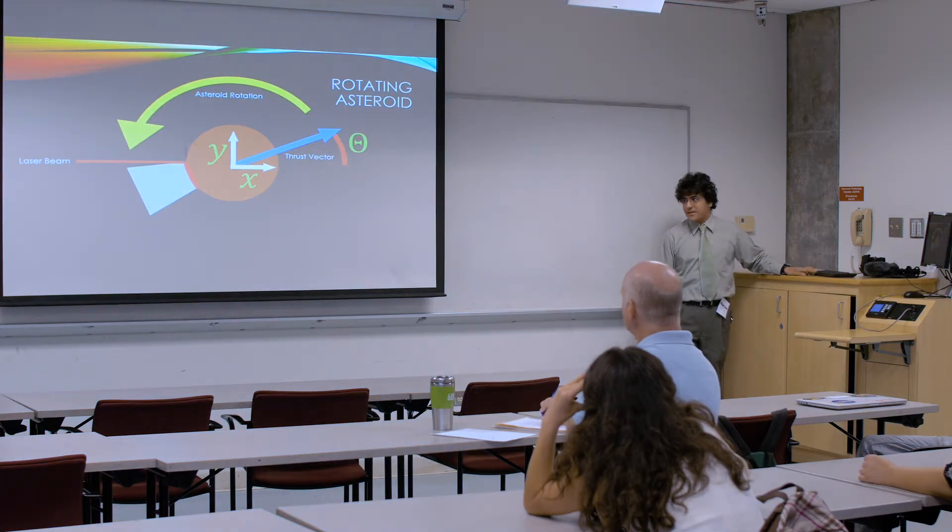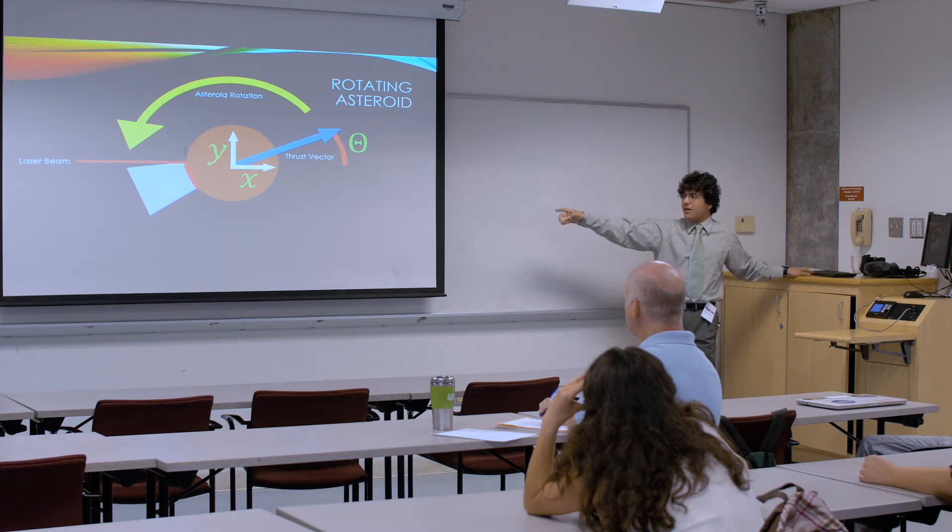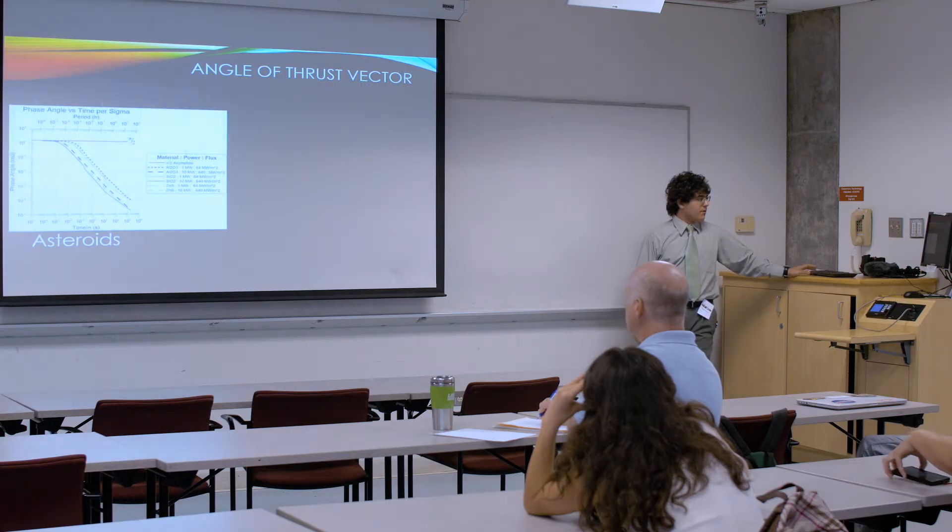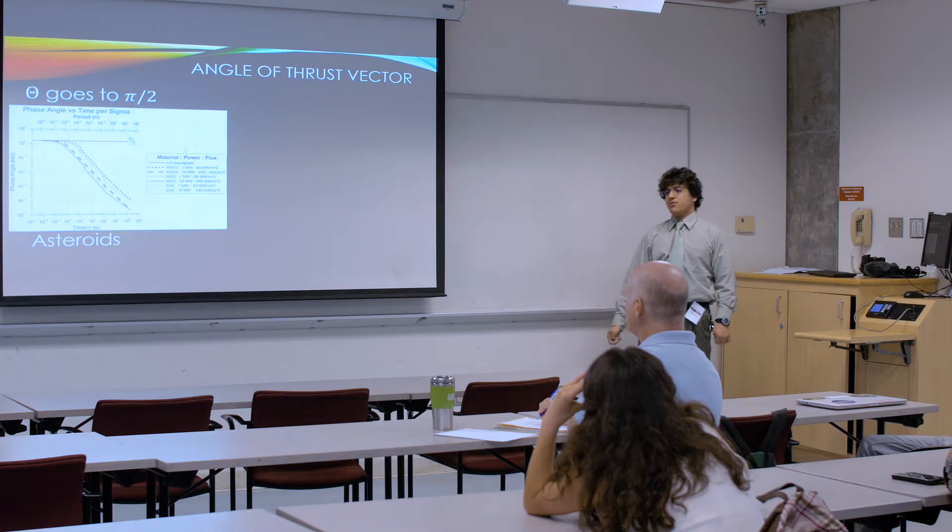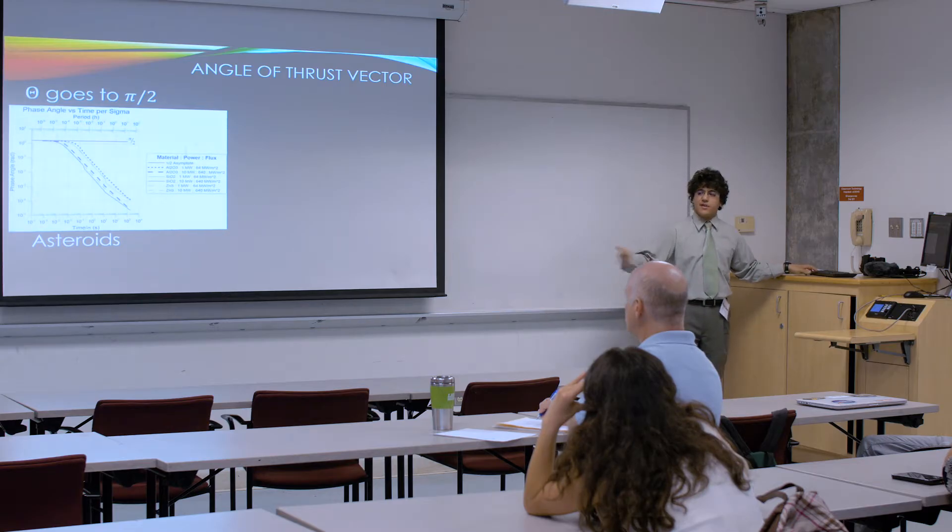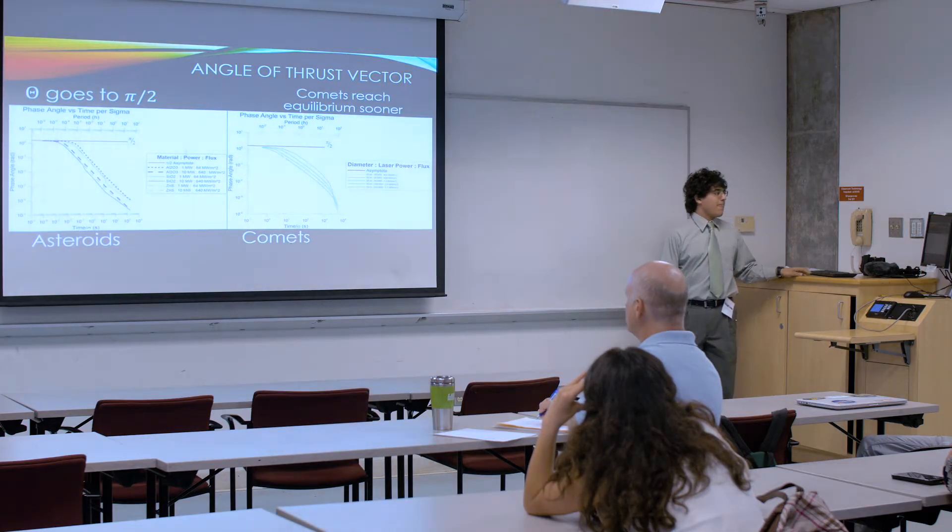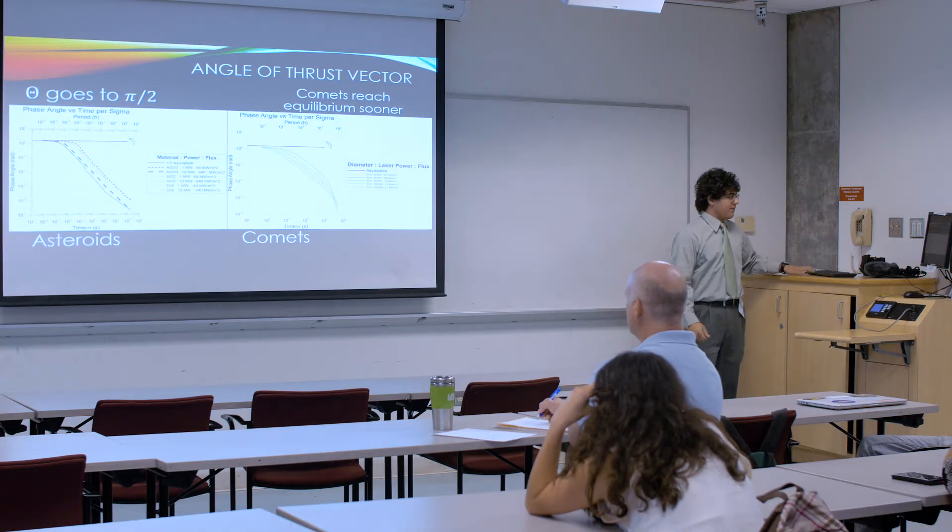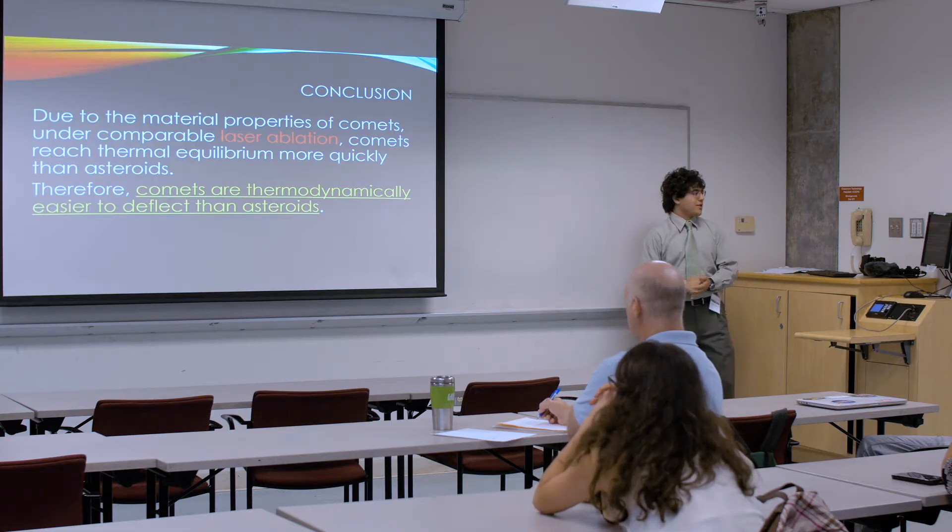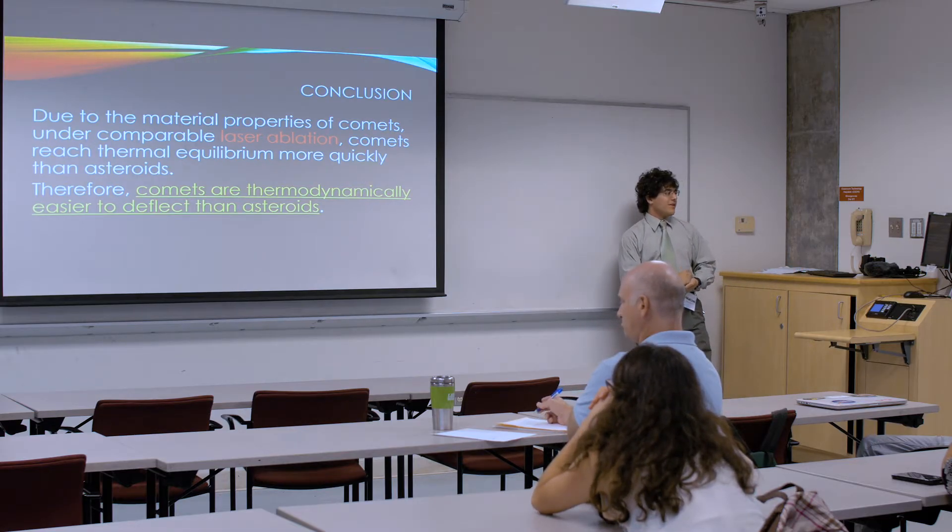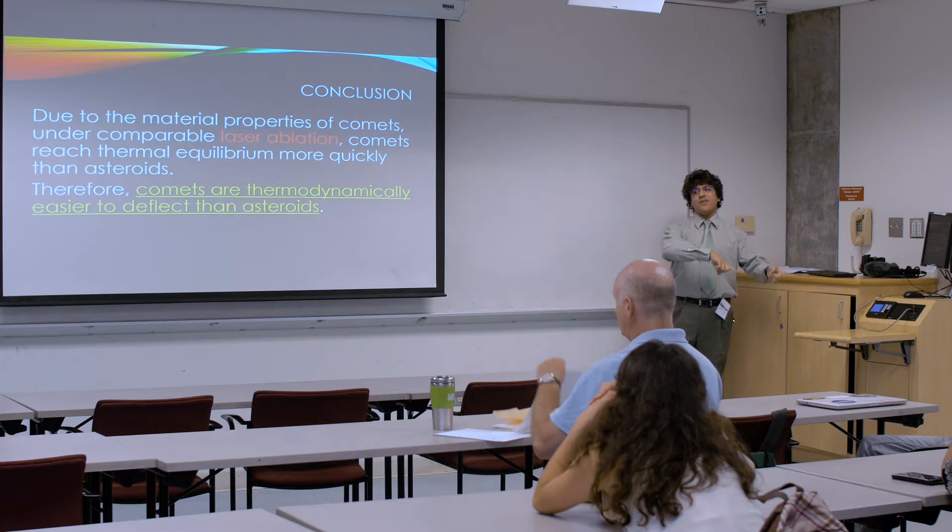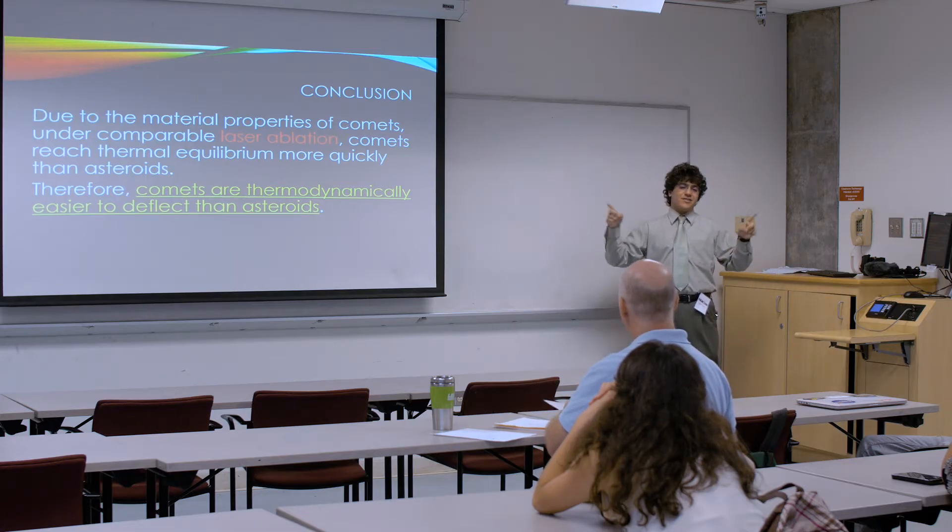Over here, I'm going to define this angle theta to be the difference between, well, you can see what that angle means. It's the thrust vector versus the x-axis. Over here, you'll notice that theta goes to pi over 2, which makes sense because that's when you're maximizing your y-component. You're not going to get anything past that. Otherwise, the asteroid would be going backwards. That'd be kind of strange. And you'll notice, yet again, comets reach equilibrium sooner for the same laser setups. To conclude, due to the material properties of comets under comparable laser ablation, comets reach thermal equilibrium more quickly than asteroids. Therefore, thermodynamically speaking, comets are easier to deflect than asteroids.